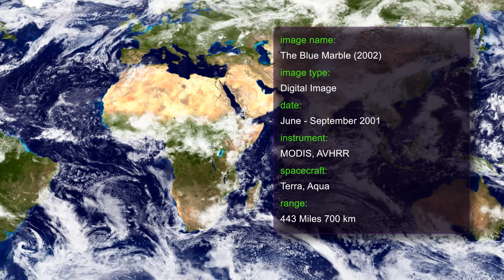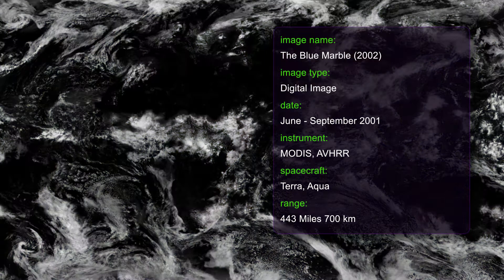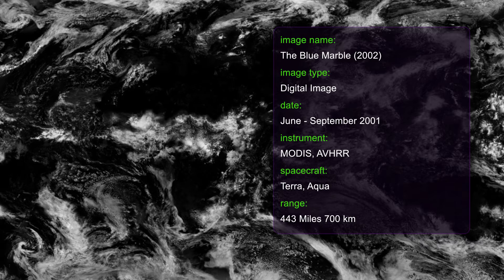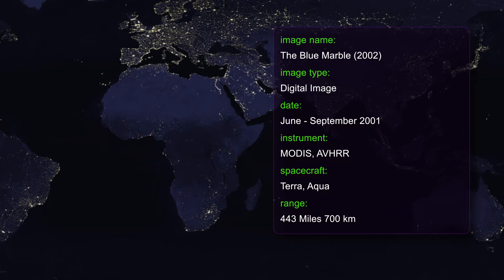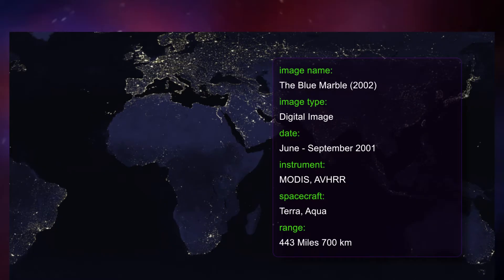The cloud image is a composite of two days of imagery collected in visible light wavelengths and a third day of thermal infrared imagery over the poles. Global city lights are derived from nine months of Defense Meteorological Satellite observations superimposed on a darkened land surface map.